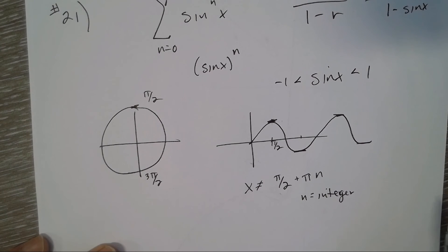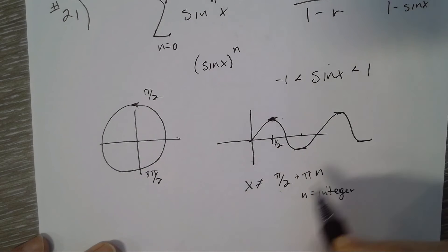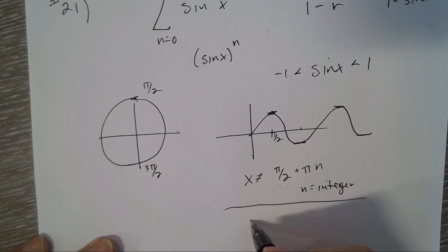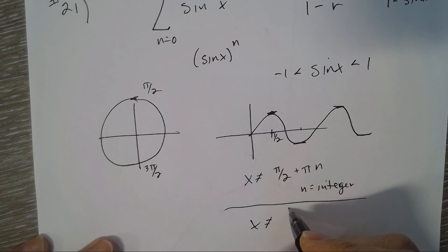You could also represent x not equal to π over 2 times n, where n is an odd integer.